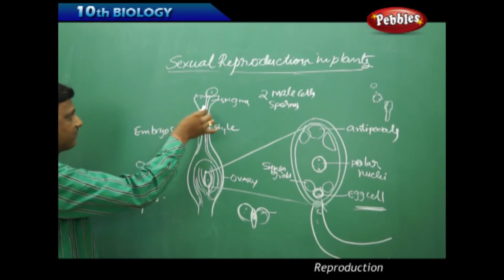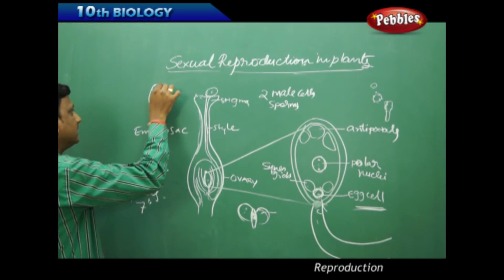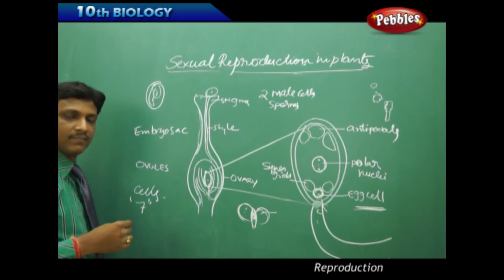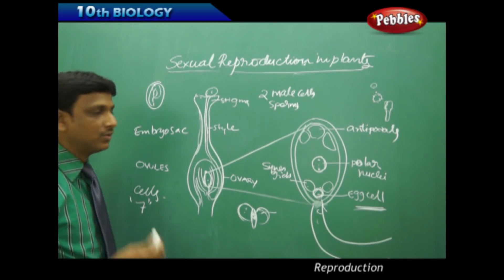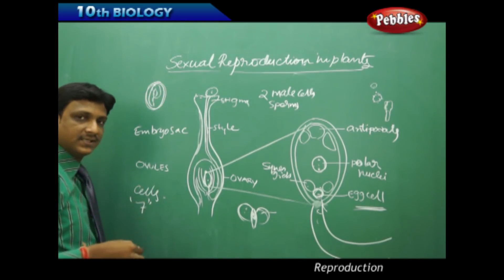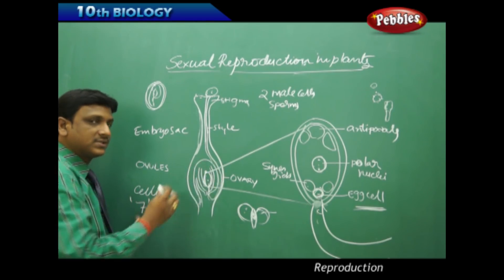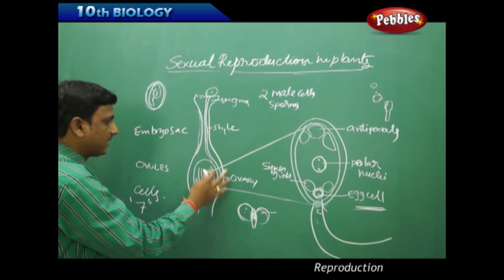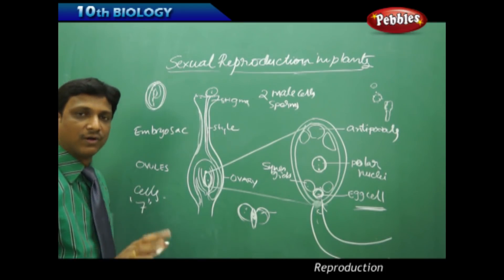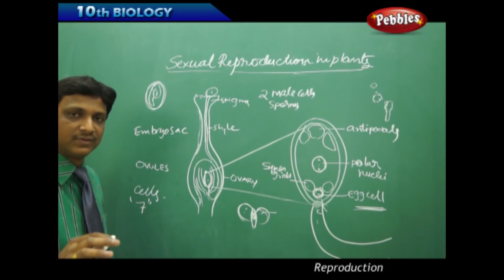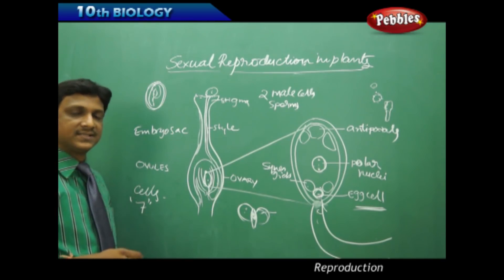After fertilization, the ovule turns into a seed, and the zygote develops into an embryo. The ovary of the flower becomes the fruit. Other parts like the sepals, petals, style, and stigma get wrinkled and fall off. The ovary turns into the fruit, and the ovules turn into the seeds.